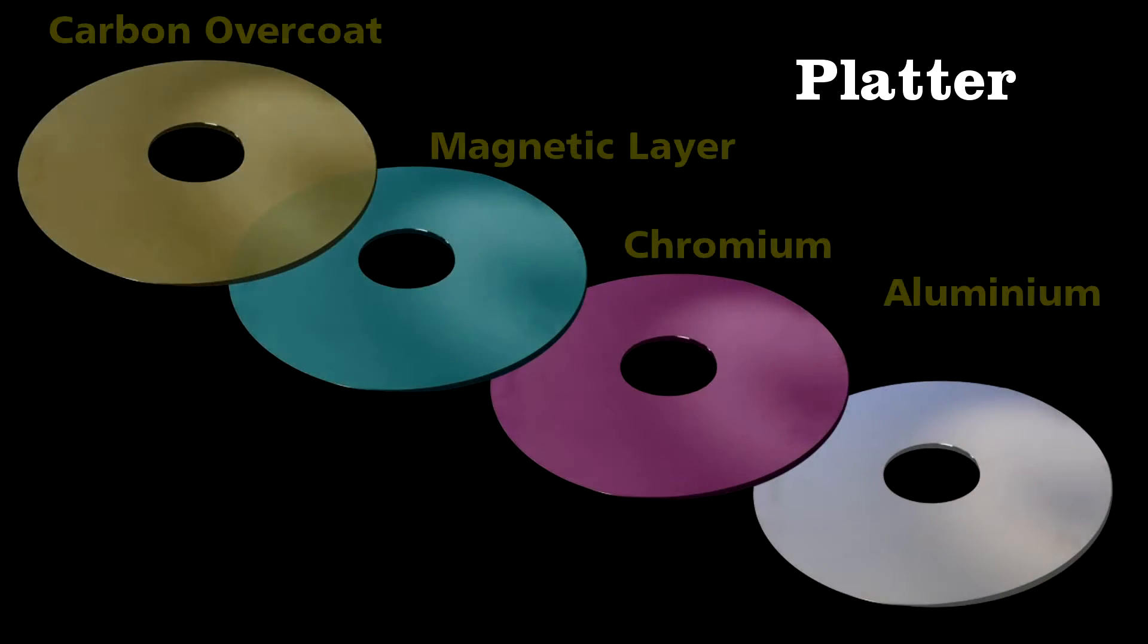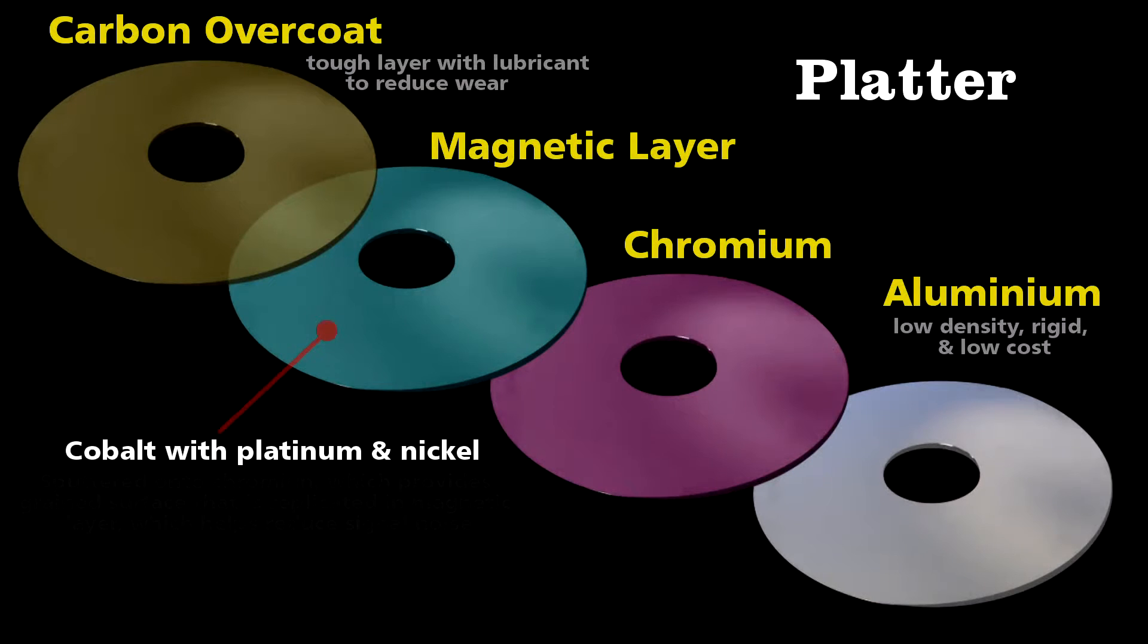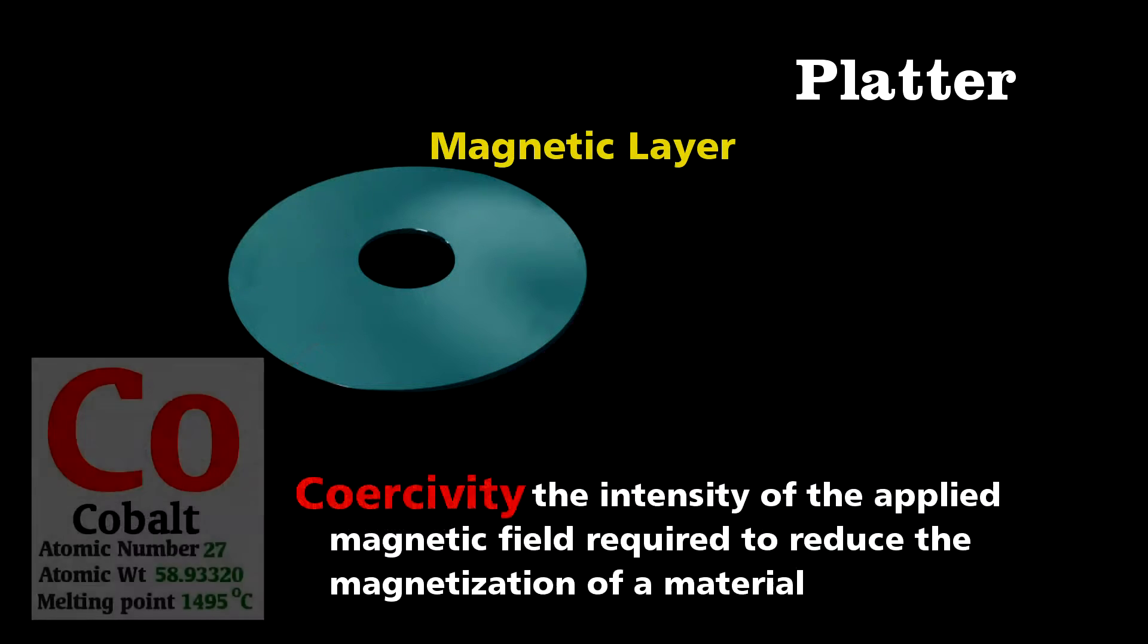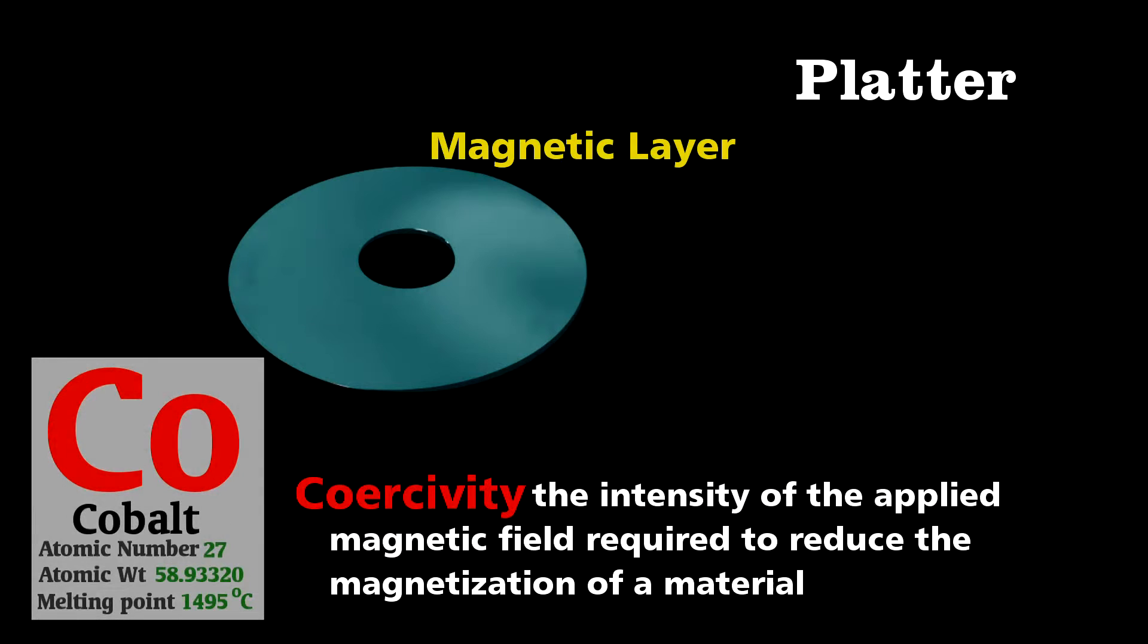The key element of the platter is the magnetic layer, which is cobalt with perhaps platinum and nickel mixed in. Now, this mixture of metals has high coercivity, which means that it will maintain that magnetization, and thus data, until it's exposed to another powerful magnetic field.